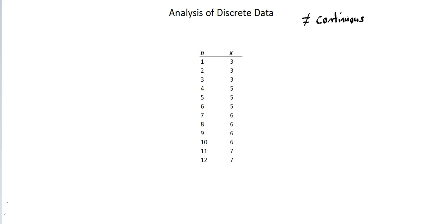There is an integer limit to a person. There are two people, three people, 8,000 people, but not three and a half people. Continuous would be something like measuring the weight of people. There are an infinite number of options for weight because, for example, if we look at the range of 150 pounds to 151 pounds, between those two we could have 150.1, 150.5, 150.9, 150.9999, etc. Weight is an example of a continuous concept.